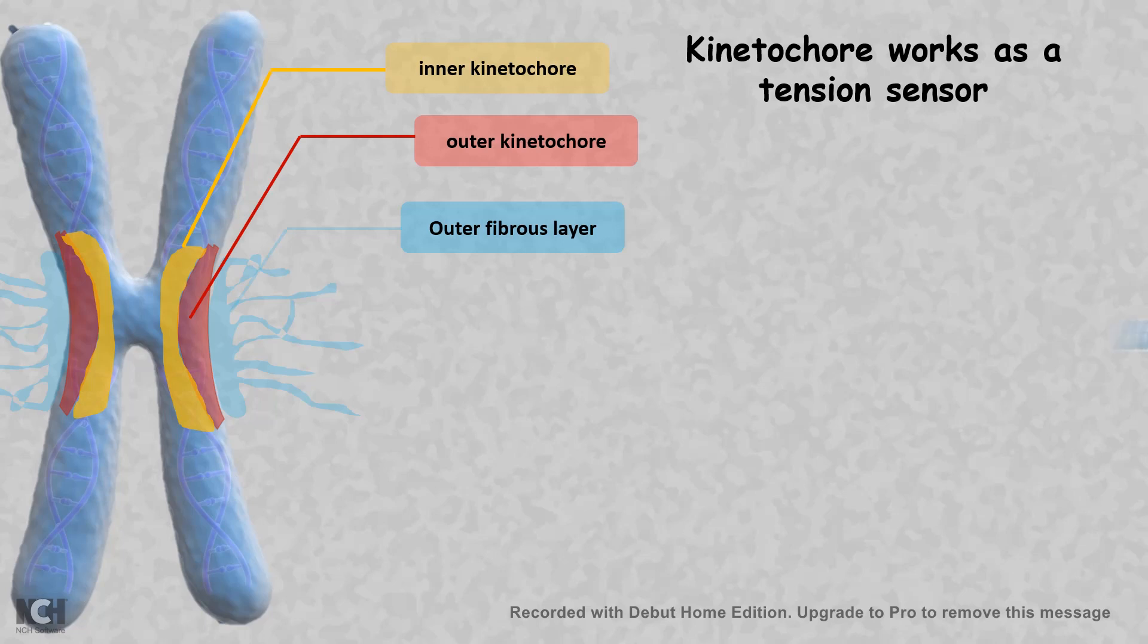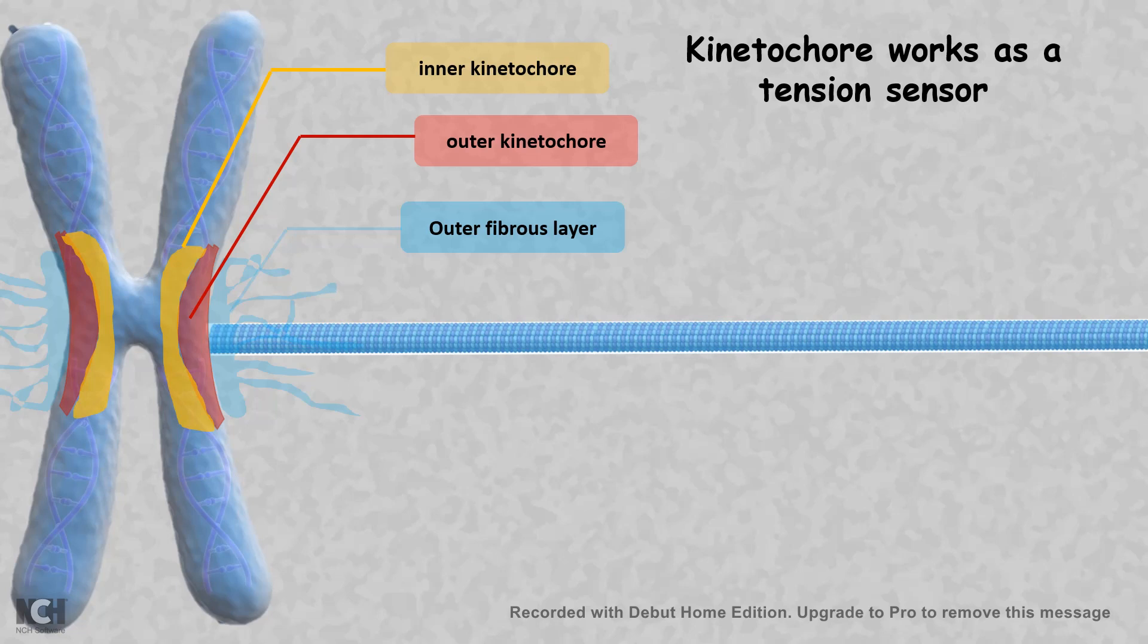The microtubule docks to the outer kinetochore and gets attracted by the outer fibrous layer. Kinetochore is different from other regions of the chromosome because it has a histone variant and its nucleosome is known as CENP-A.